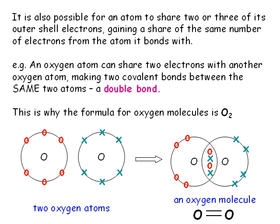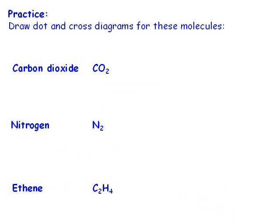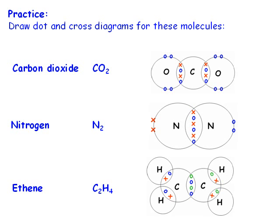Sometimes non-metals with a valency of more than one will form a double covalent bond. They do this by sharing two of their electrons to gain a share of two from another atom. This means there will be two pairs of electrons in the intersection of the outer shells. We see this, for example, in oxygen O₂. It's even possible to have a triple bond if the atoms each have a valency of three or four. Pause the video and have a go at these covalent dot and cross diagrams which each have a double or triple bond in them. Here are the answers — pause the video and check your working.